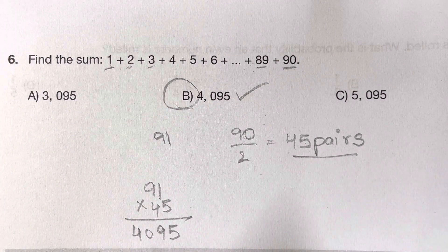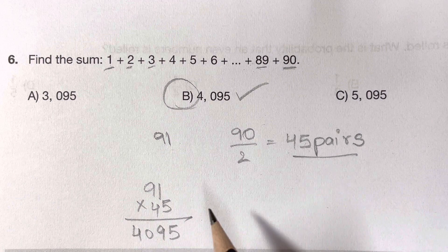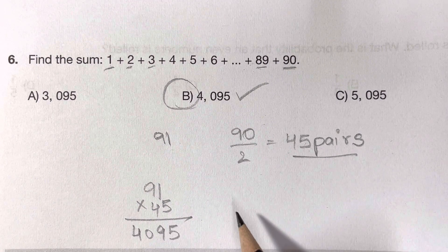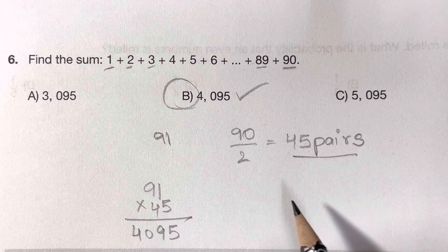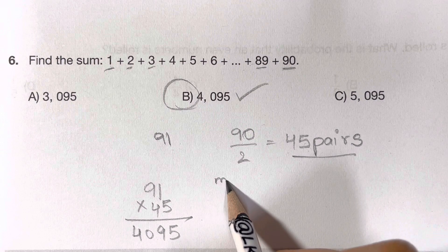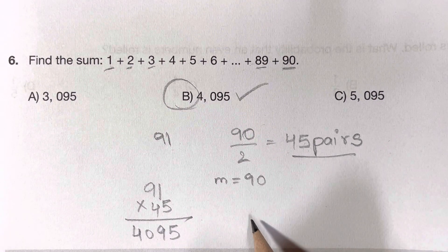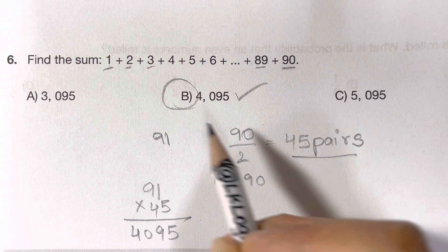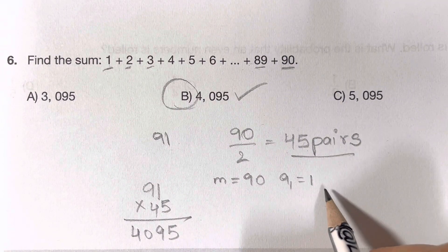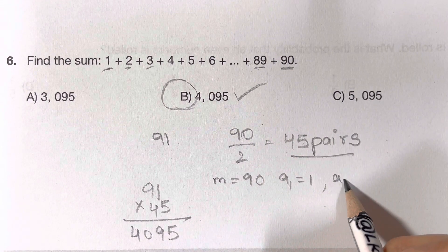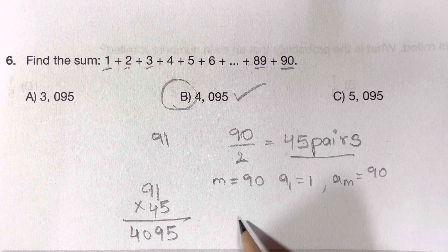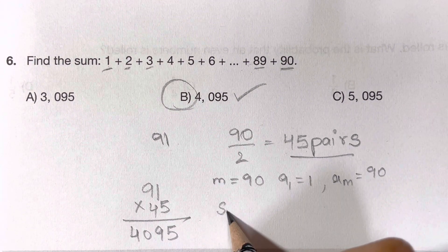Now this simple trick we have, we also got it in an identity or a formula. You can derive it as a formula. The trick I showed you is for you to understand. Now total numbers is 90, so let m is equal to 90. And then what's the first number? a1, let's say a1 is equal to 1, and the last number am is equal to 90.